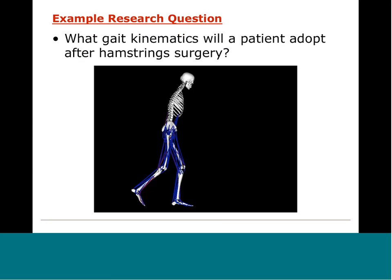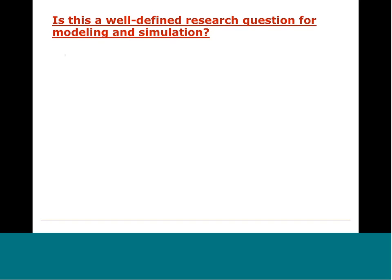Let's illustrate the process of defining a research question with a few examples. Children with cerebral palsy often walk with excessive knee flexion, called crouch gait. Hamstring lengthening surgery is often prescribed to relieve tightness or spasticity in the hamstrings and thus improve knee kinematics during walking. Consider the research question: what gait kinematics will a patient adopt after hamstring surgery — what knee flexion angles, what hip flexion angles, etc.? Is this a well-defined research question for modeling and simulation?